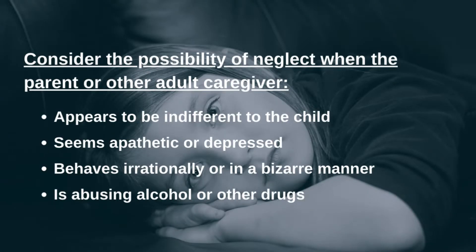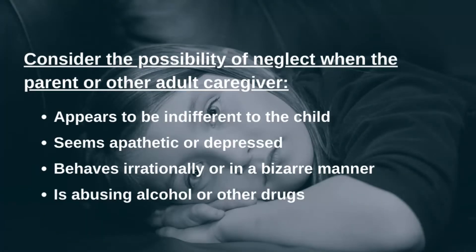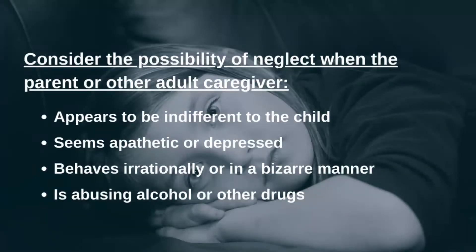You can also consider the possibility of neglect when the parent or other adult caregiver appears to be indifferent to the child, the adult seems apathetic or depressed, the adult behaves irrationally or in a bizarre manner, or the adult is abusing alcohol or other substances.